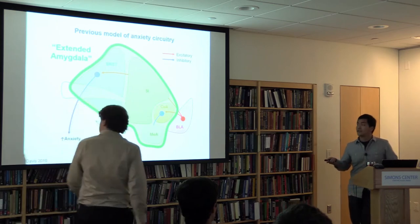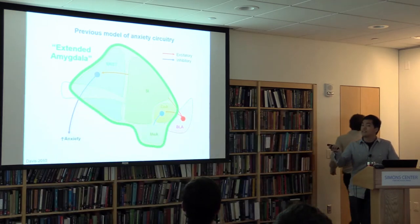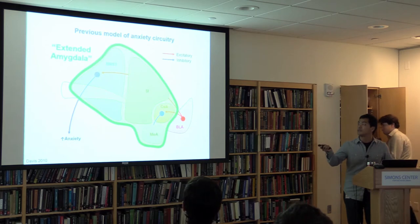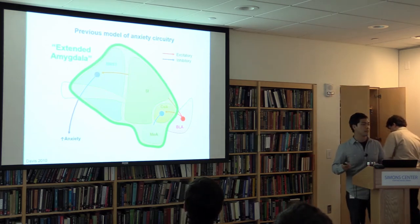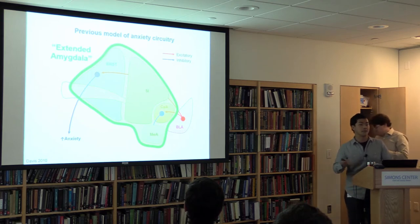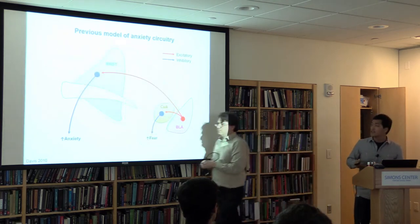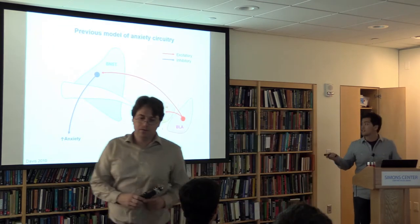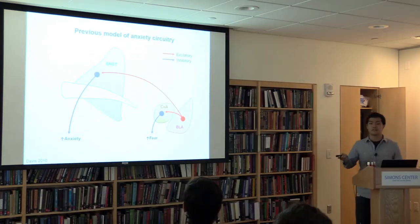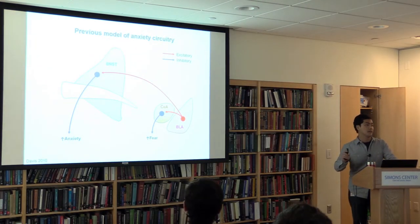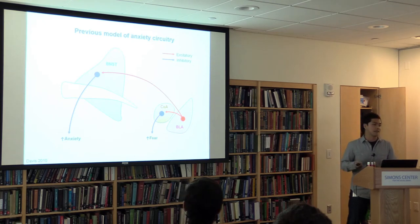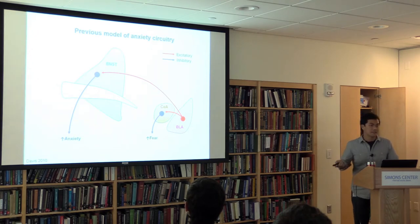To give some anatomical context: the central amygdala and the BNST belong to a superstructure called the extended amygdala, which refers to a continuum of structures sharing similar cellular morphology, neurochemical makeup, and input/output structures. Both the central amygdala and the BNST receive relevant sensory and environmental information from the BLA and project to shared downstream structures in the brainstem and hypothalamus to elicit anxiety and fear. This is a simple and straightforward model, but nature is always more complicated than that.